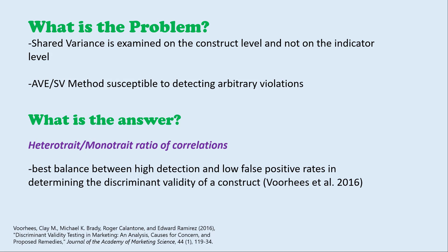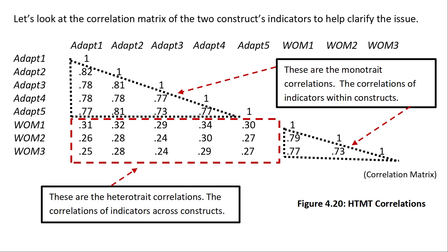Let's get into what the heterotrait-monotrait is, what it means, how to do it, and the formula to calculate it. If we want to look at discriminant validity between just adaptive behavior and word of mouth, we first do a correlation between all the indicators of adaptive behavior and word of mouth — five adaptive behavior indicators and three word of mouth indicators. The heterotrait correlations, shown in the red box, are the correlations across constructs — for example, adapt one correlating with word of mouth one, two, and three.